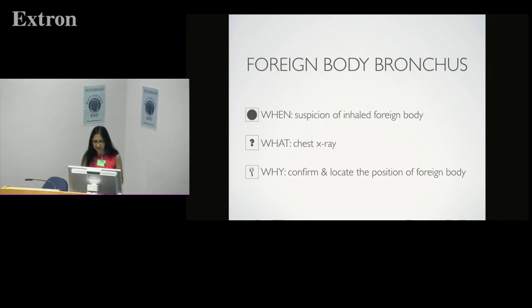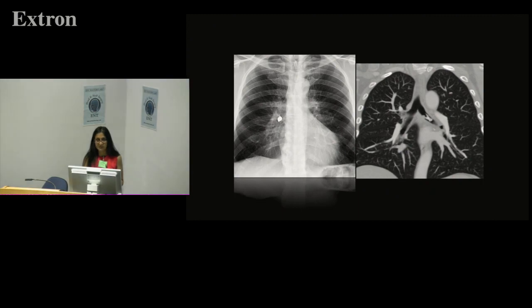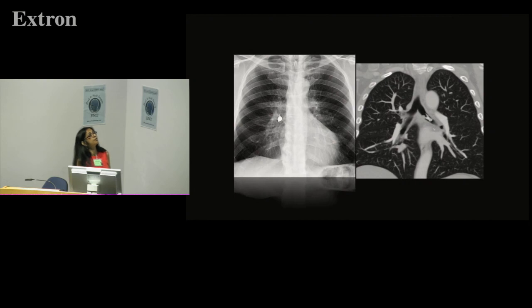When a patient presents with suspicion of a foreign body in the bronchus, you would do a plain x-ray of the chest to confirm and locate the position. Here is a dental amalgam that has gone into the right main bronchus.